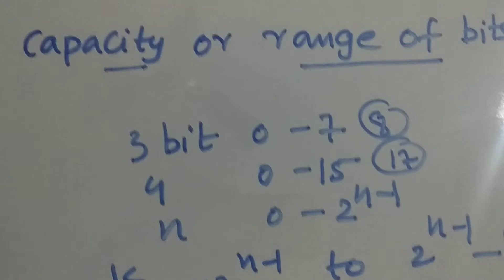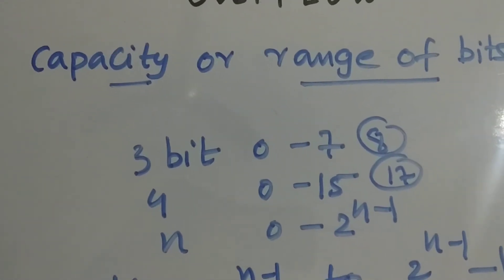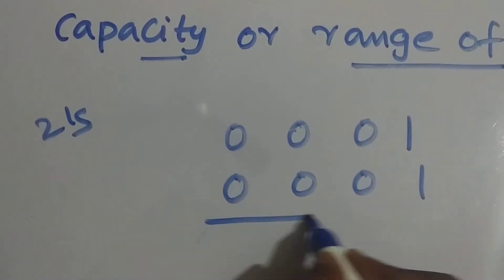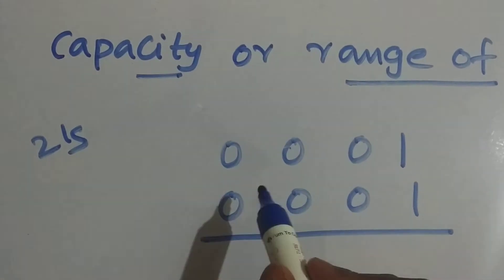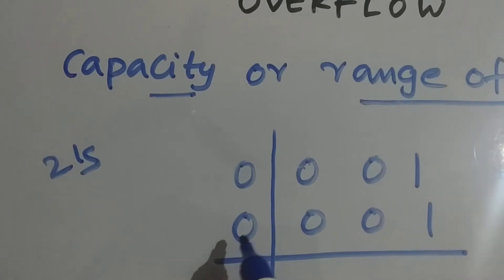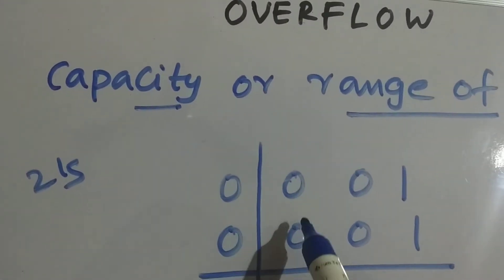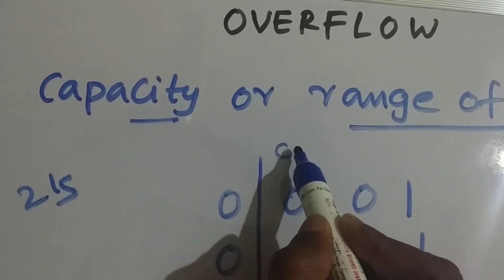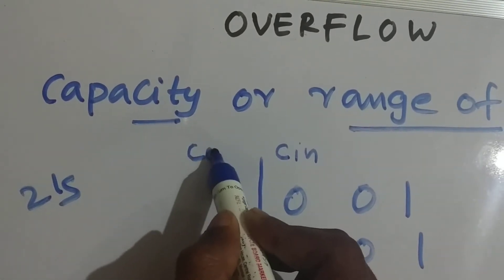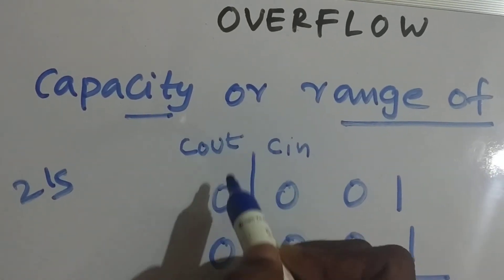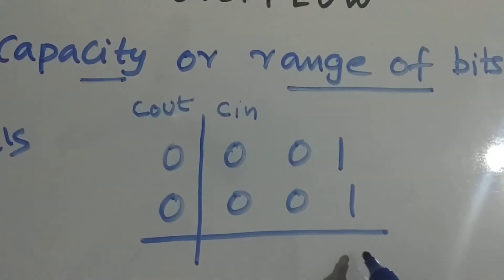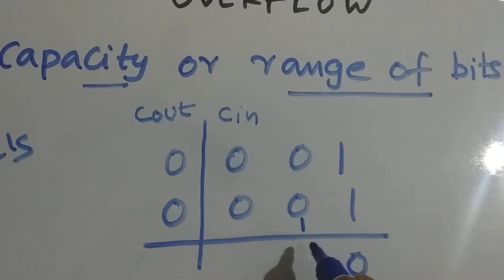Now let's see how overflow occurs and how to detect it simply. We're going to add two's complement numbers. Before adding, divide with a single line between the MSB and MSB-1 bit. Whatever carry we get from MSB-1, write it as C_in. Whatever carry we get from the MSB, write it as C_out.